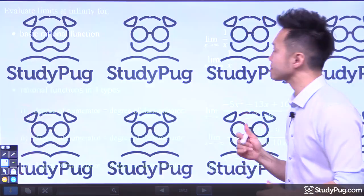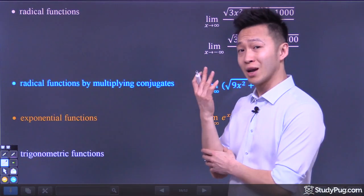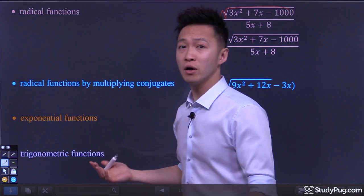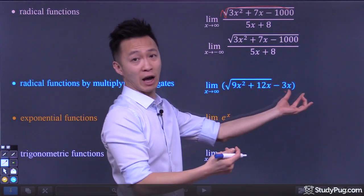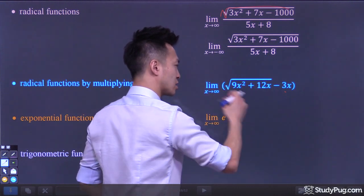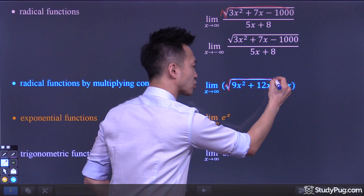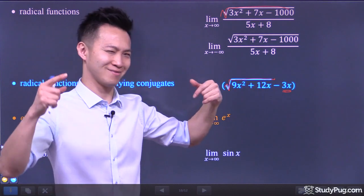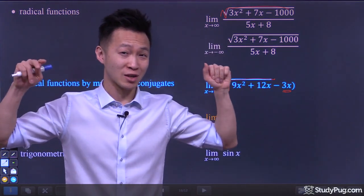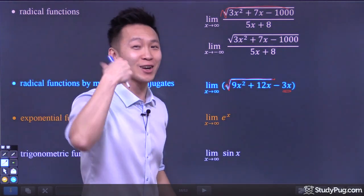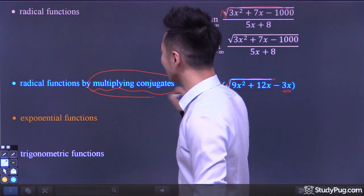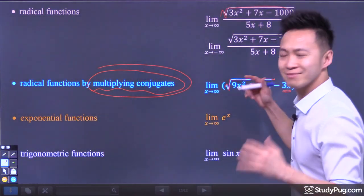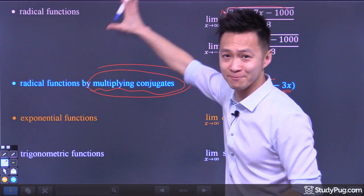Next, we're going to start looking into finding the limits at infinity for various types of functions, such as radical functions or functions involving a radical and something else. We're taking the limit of this complicated function involving a radical and something outside of the radical. We're going to revisit the famous algebraic manipulation called multiplying conjugate, which we learned in our previous algebra course, and apply that here. So as you can see, we're going to be doing a lot of algebra throughout this lesson.